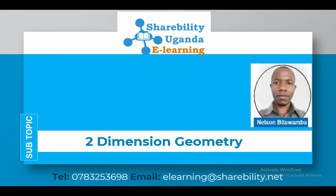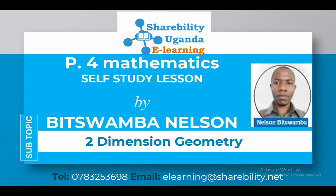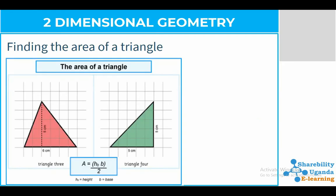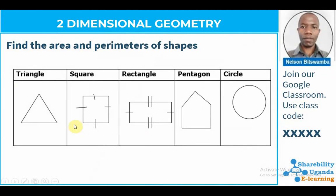My name is Nelson Mitsamba. This is Ability Uganda e-learning. In today's video we shall be talking more about two-dimensional geometries. In these geometries we are dealing with shapes — how do you find the area, how do you find the perimeter — things of that kind. In recent videos I've covered the area and perimeter of a square and a rectangle.